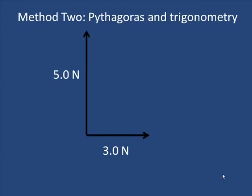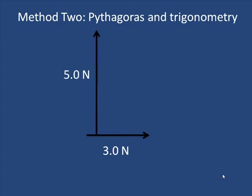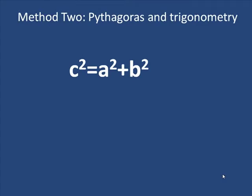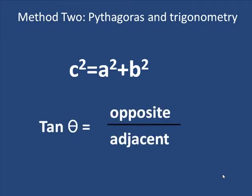Now, the other way, of course, is Pythagoras and trigonometry. And we add them head to tail. And so I'm going to take c squared is a squared plus b squared. And tan theta is opposite over adjacent. These are the two things I need to add these two vectors together.